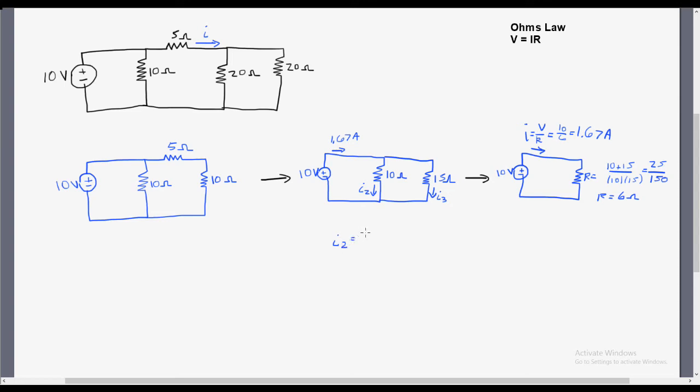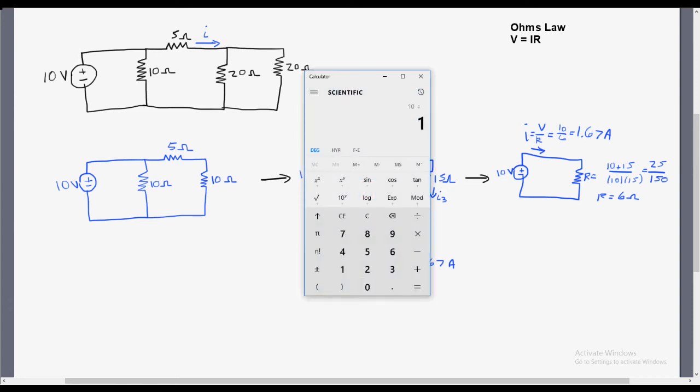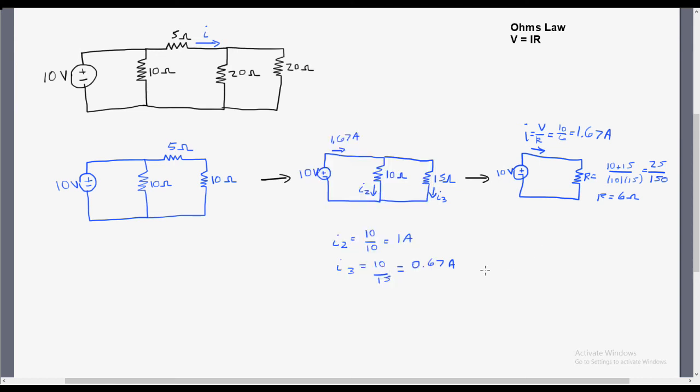We know that each resistor is being applied at 10-volt voltage source to each one. So 10 volts over 10 ohms is 1 amp, and for the 15-ohm resistor, we have 10 volts over 15 ohms, which is going to be equal to 0.67 amps. This makes sense because the current going through both of those resistors has to be equal to the current entering that resistor network.